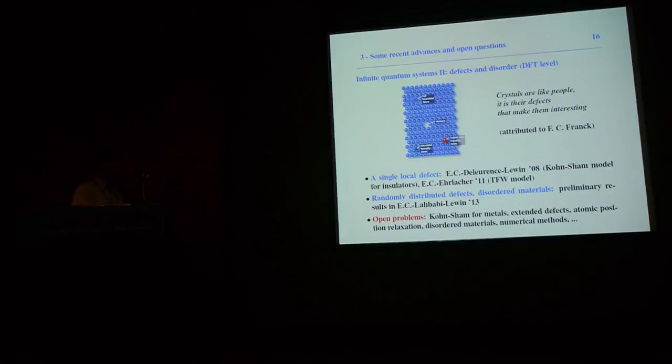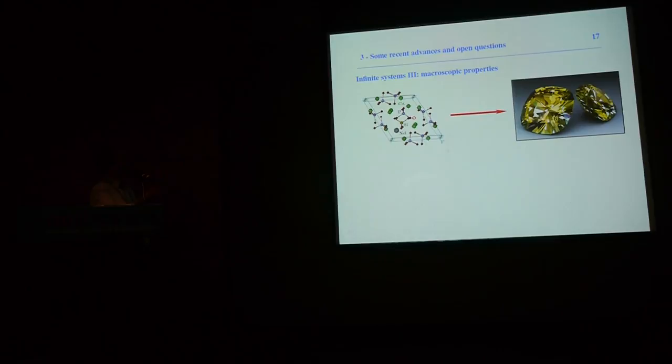Later, still with Mathieu Lewin and another student, we tried to do the same for a crystal with a random distribution of defects. This turns out to be much more complex; for the Coulomb interaction we were only able to handle short-range interactions to pass to the thermodynamic limit. We were able to define a Kohn-Sham model for randomly distributed defects in disordered materials, but could not prove it was the thermodynamic limit of finite systems. Many problems remain open — particularly for metals, excited defects, and so on.